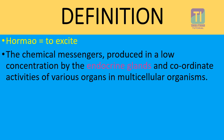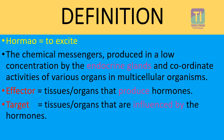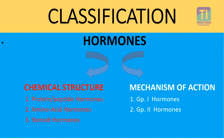While discussing hormones, we must be familiar with the following terms. First is the effector — effectors are the tissues or organs that produce hormones. Next is the target — targets are the tissues or organs that are influenced by the hormones.